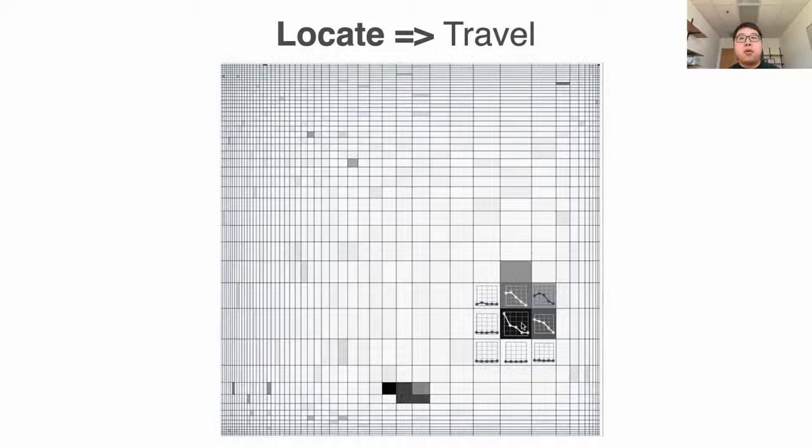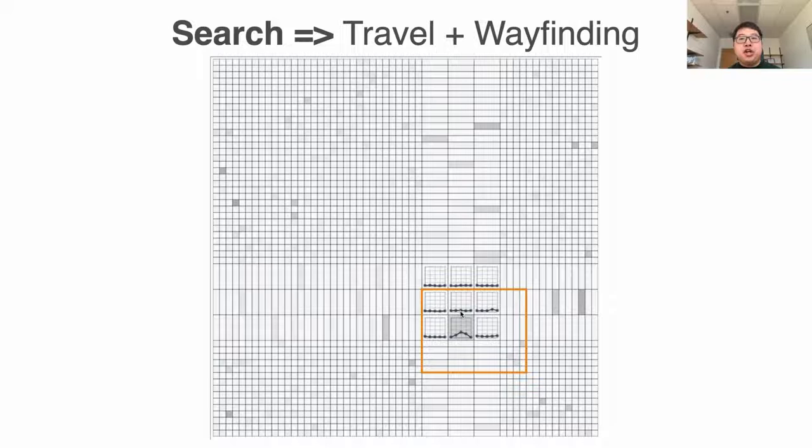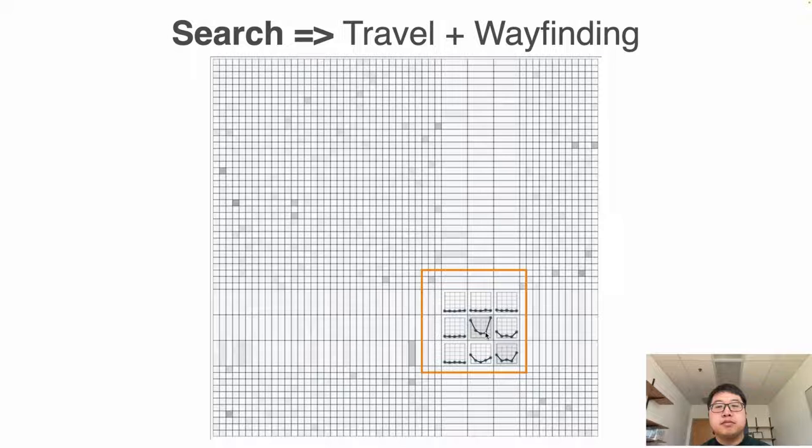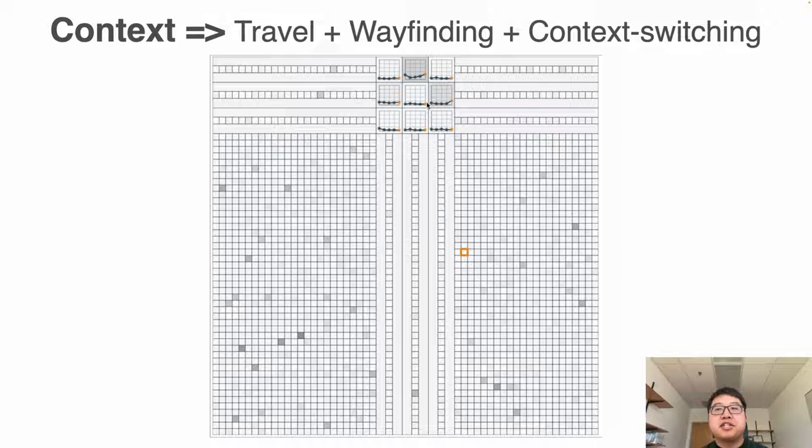Search, where participants need to search for a cell with the highest single value in a region. This tests both the wayfinding and travel components. Context, where participants need to find the largest cluster at the time instance where a given cell reaches its highest value. This tests all three interaction components in one task.